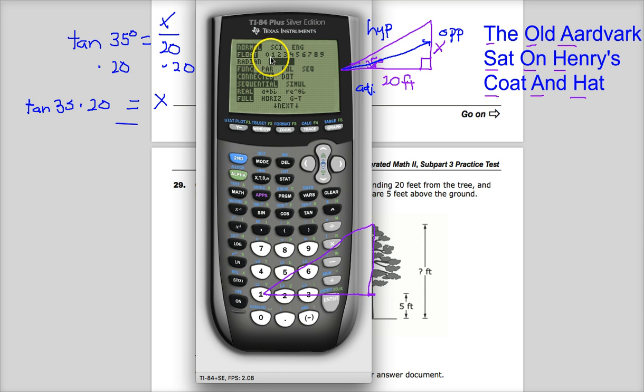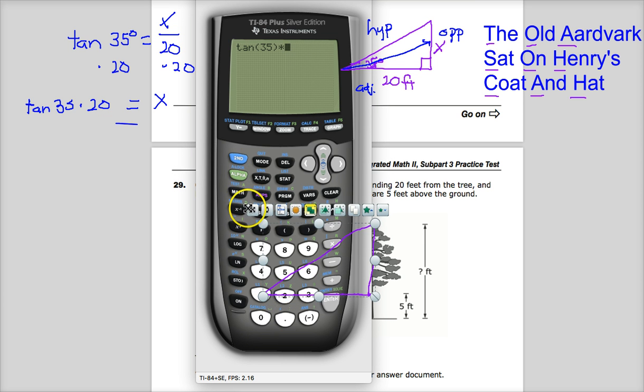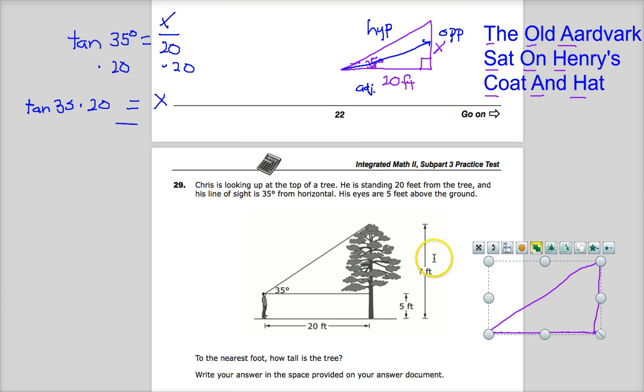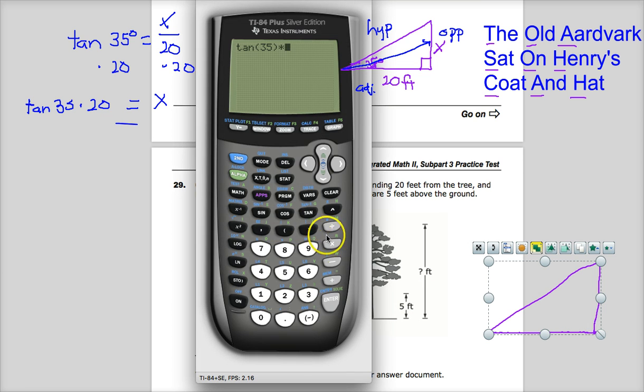Even though you knew how to do it. Because of simple stuff like this. So, tangent 35 times 20. 14.0.